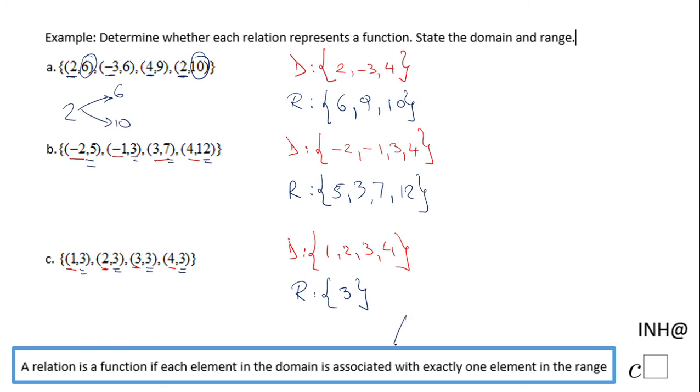We have something like that. 2 associated with 6 and then associated with 10. That is not good because a relation is a function if each element in the domain is associated with exactly one. This has two elements, so this is not a function. No, it is not a function.